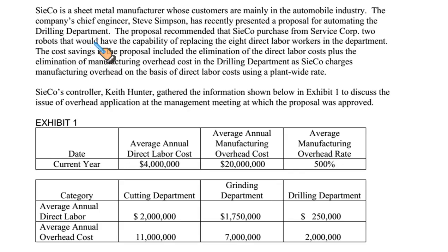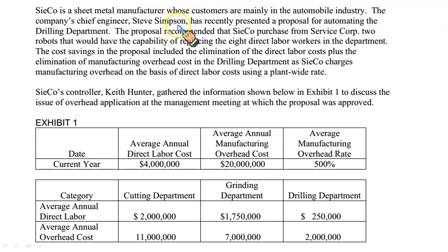Section D, SA-5. SECO is a sheet metal manufacturer whose customers are mainly in the automobile industry. The company's chief engineer, Steve Simpson, has recently presented a proposal for automating the drilling department.